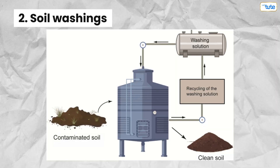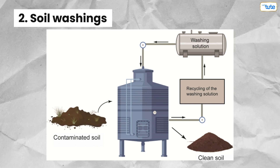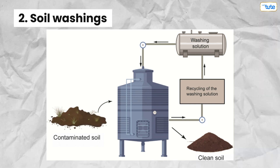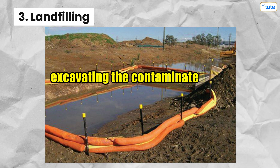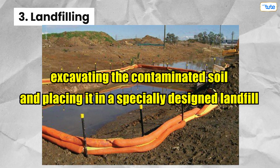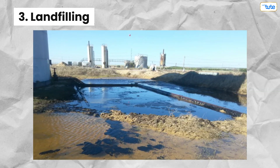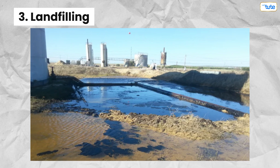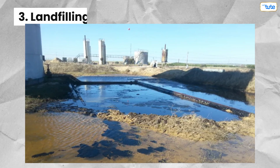Soil Washing involves physically washing the soil to remove the contaminants. This can be done using water or a chemical solution, and the soil is then separated from the liquid and treated. Landfilling involves excavating the contaminated soil and placing it in a specially designed landfill, which is designed to prevent the contaminants from leaching into the surrounding soil or groundwater.